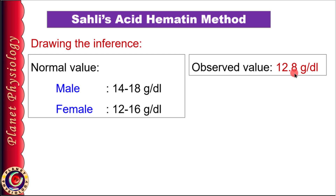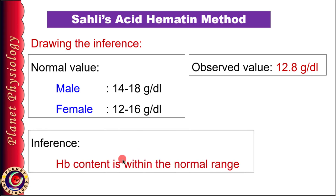Now compare this value with the normal value of hemoglobin to determine whether the hemoglobin content is within normal limits, lesser, or higher. In this case, the reading is 12.8 gram percent and this is a sample from a female — comparing with the normal range for females, I can infer that the hemoglobin content is within the normal range.